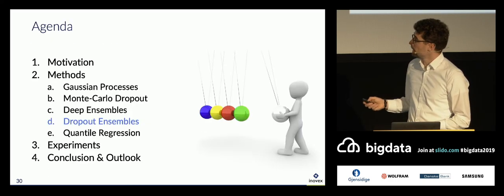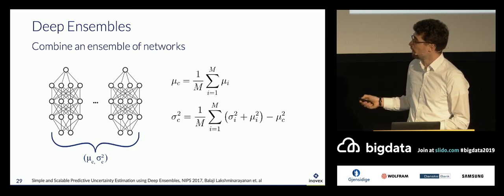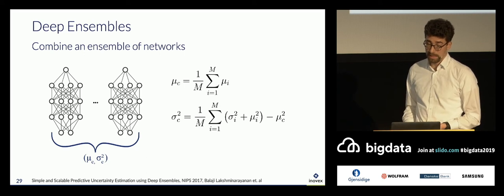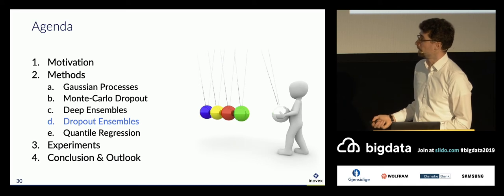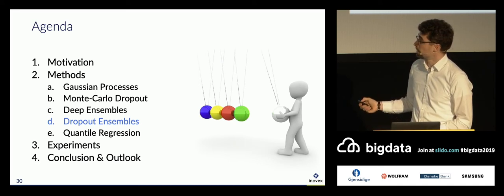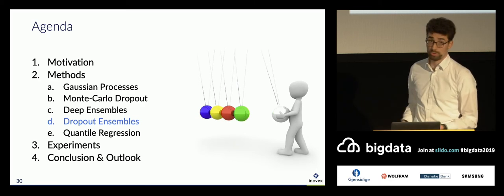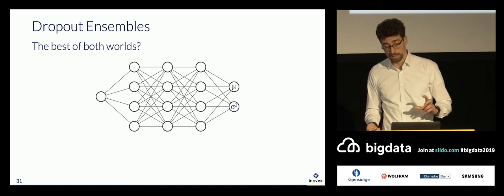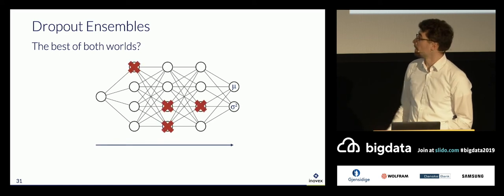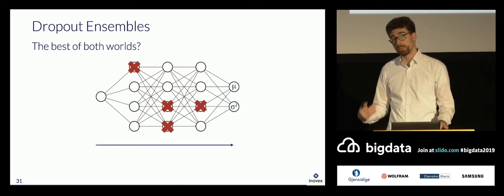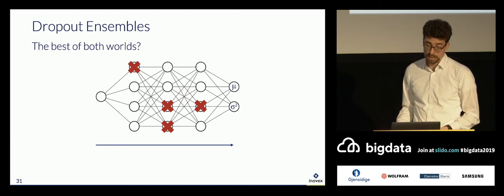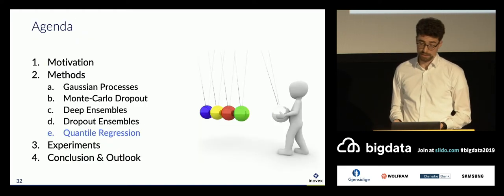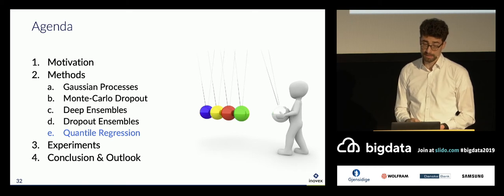One problem of course is that with a lot of neural networks you have a lot of computation and hardware costs. What Simon and I thought was: why not combine the best of two worlds? Why not take the idea of Monte Carlo Dropout and deep ensembles to come up with dropout ensembles? We use a single network from the deep ensembles approach, and instead of having an ensemble of networks, we apply dropout and treat each dropout configuration as one different network. We then calculate those averaged means and standard deviations.